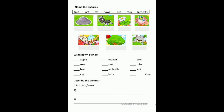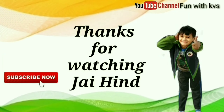यही हमारा rule लागू होता है: जिन words की starting consonant से हो और singular noun हो, तो A article use करेंगे; और जिन words की starting vowel से हो और singular noun हो, तब AN use करेंगे। इन words को use करके sentences भी बनाने हैं — for example: it is a pink flower, this is a beautiful butterfly। Describe the pictures and write sentences in your copy. Okay friends, bye, thank you for watching.